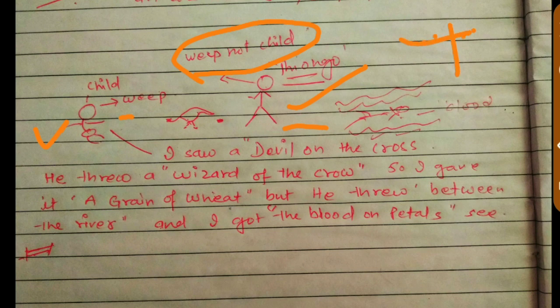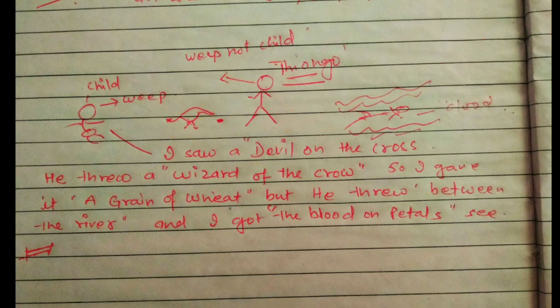The child says, 'I saw a devil on cross. There was a cross and there was a devil on it. The devil through a wizard of the crow.' You can see here the picture of a crow. So I gave it a grain of wheat.